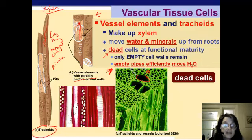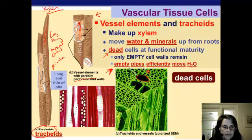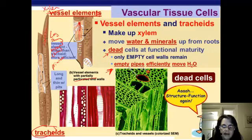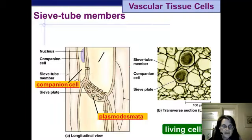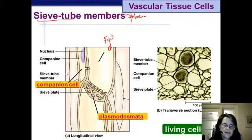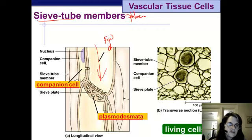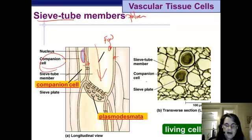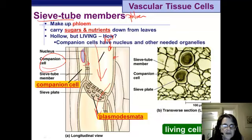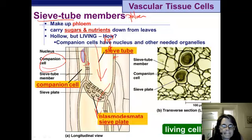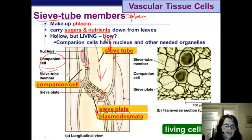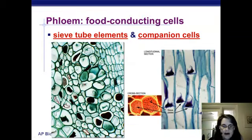Sieve tube members are phloem cells — tubes that carry food down the plant, not water up. Unlike xylem cells, sieve tube members are living cells at maturity, but they must be hollow so food can move through. They have companion cells beside them that have a nucleus and organelles to help keep them alive. The barrier between two sieve tube members is called a sieve plate, and it has holes in it to allow nutrient flow.